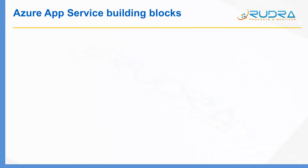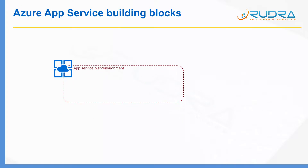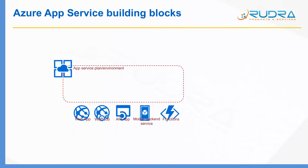The most fundamental building block of Azure App Service is App Service Plan or App Service Environment. There are two types of hosting environments within App Service: App Service Plan and App Service Environment. App Service Environment is a more sophisticated version of App Service Plan and comes with a lot more features. Within an App Service Plan or App Service Environment, you can host a number of apps.